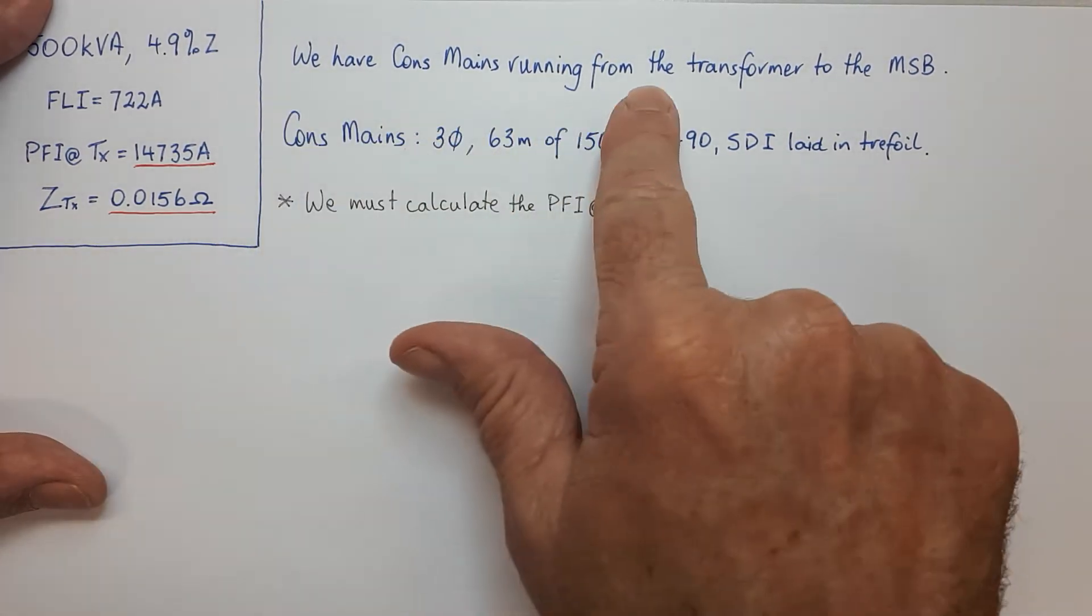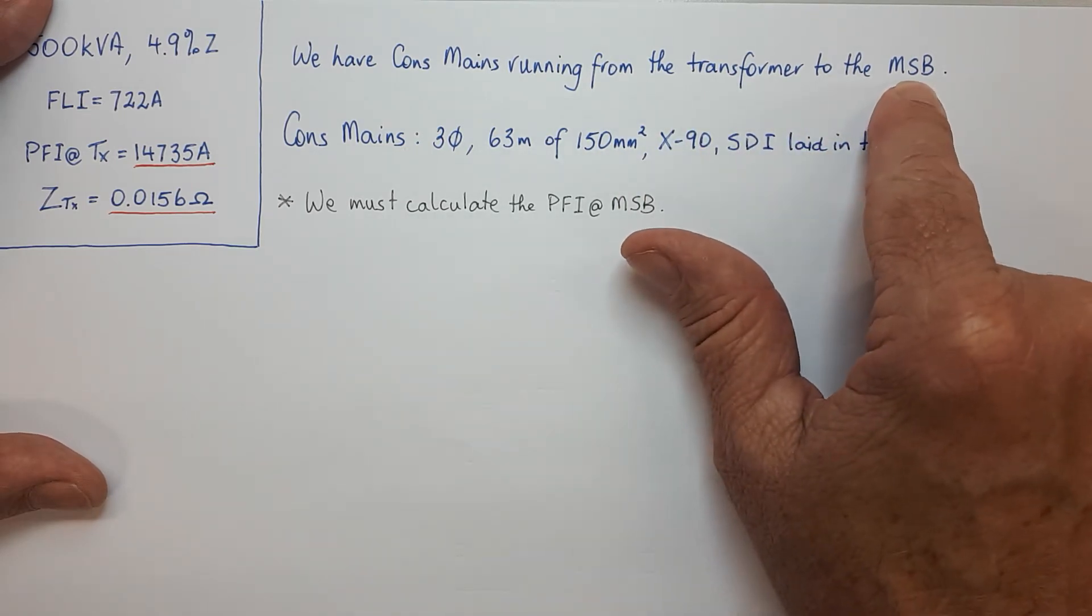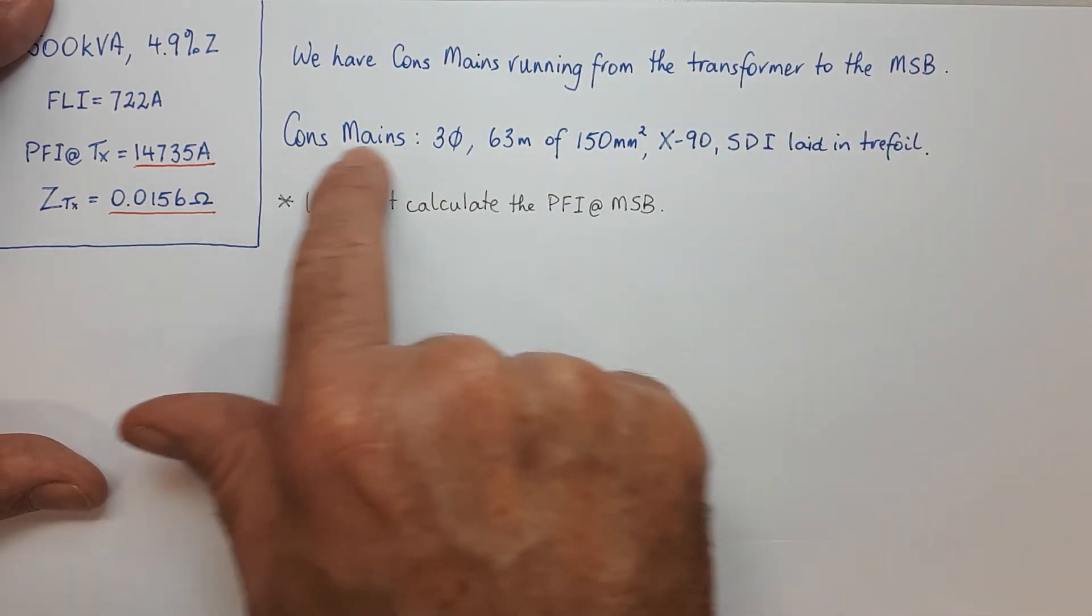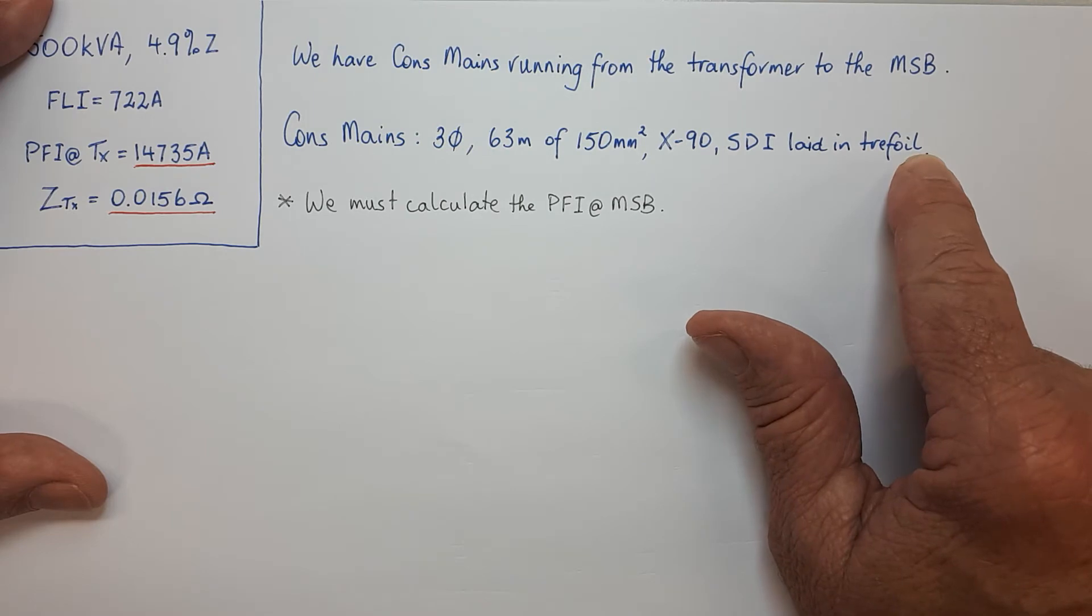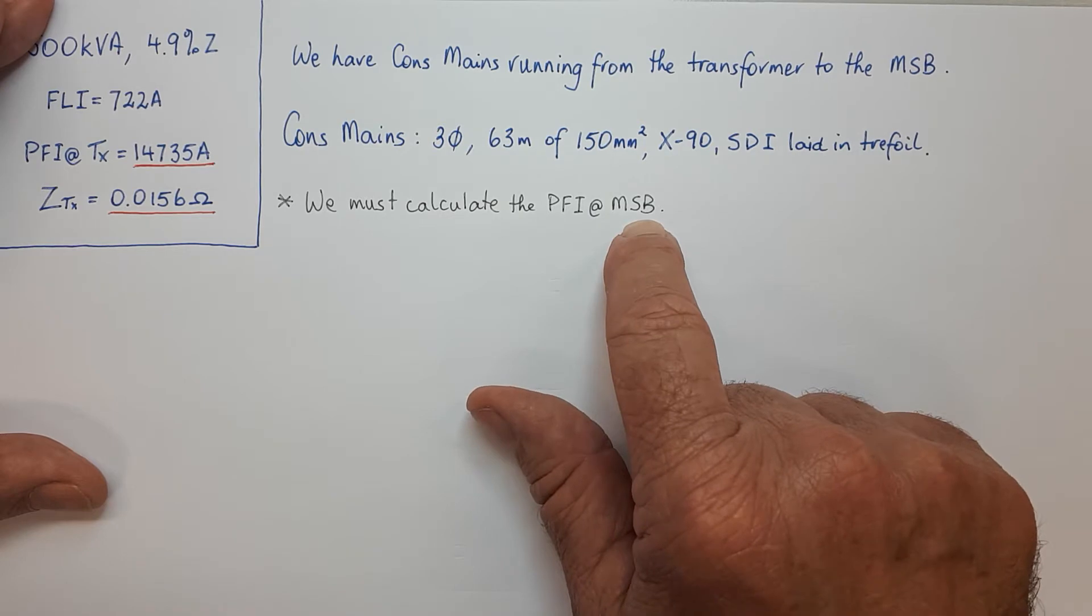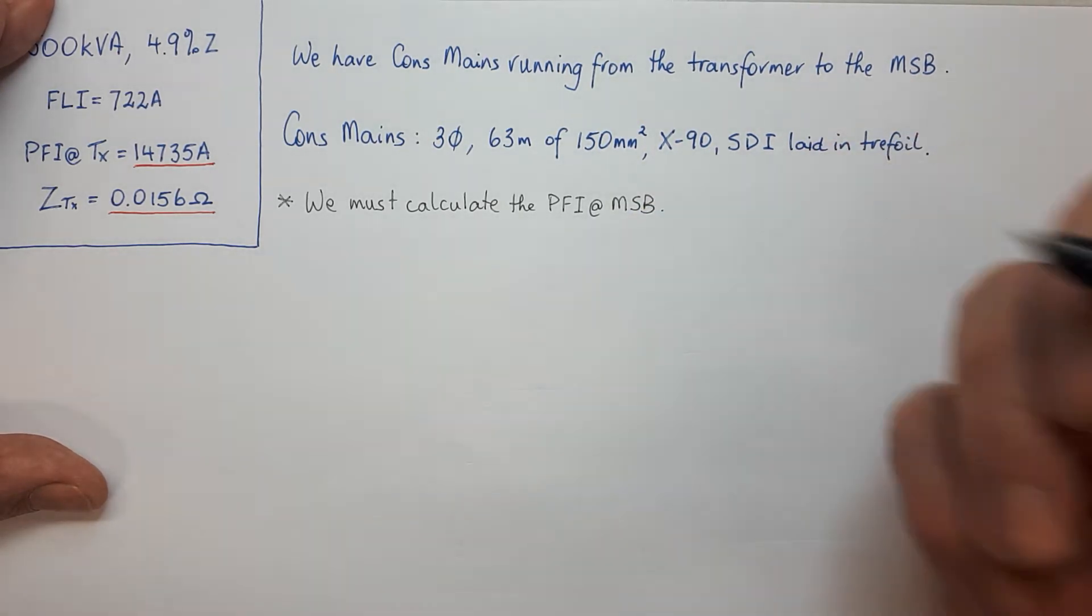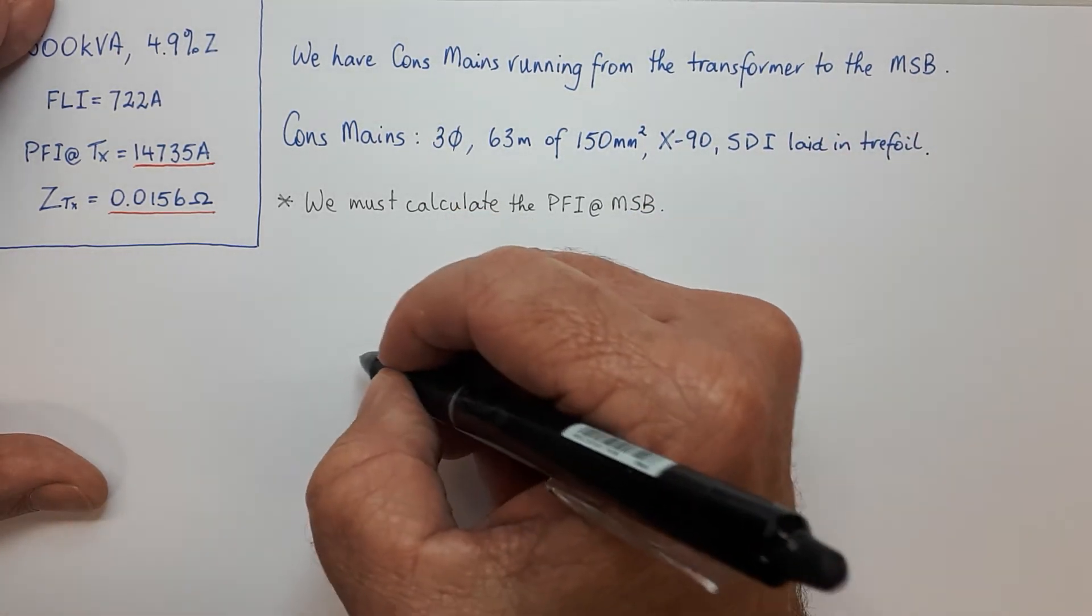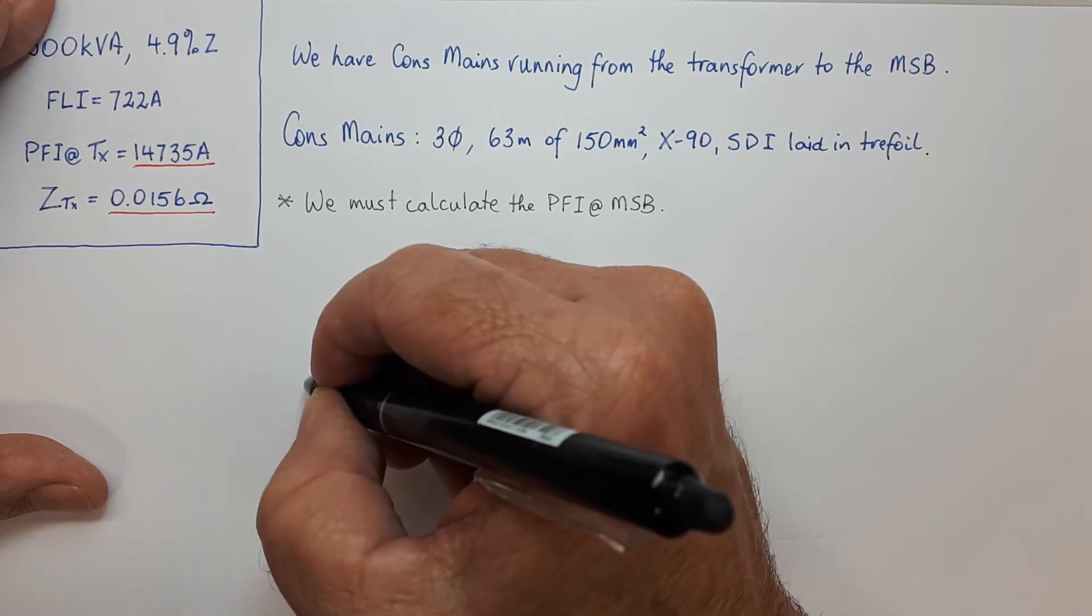Now the next question to tackle is if we've got cons mains running from the transformer to the main switchboard, we're told what the mains consist of and we have to calculate the prospective fault current at the main switchboard. An easy way to look at this is with a single line diagram.